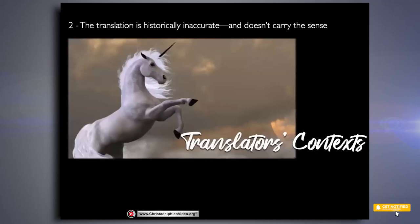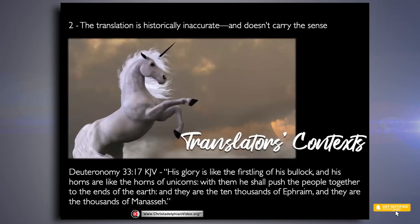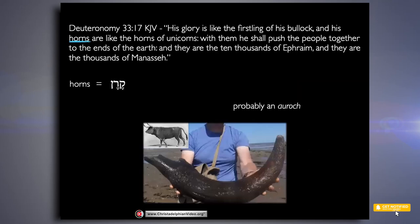Now category two: historically inaccurate and doesn't carry the sense. This is where we get unicorns. Deuteronomy 33:17 in the King James: 'his horns are like the horns of unicorns; with them he shall push the people together to the ends of the earth, and they are the ten thousands of Ephraim, and they are the thousands of Manasseh.' Where did 'unicorns' come from?